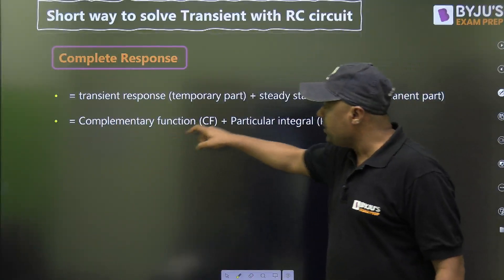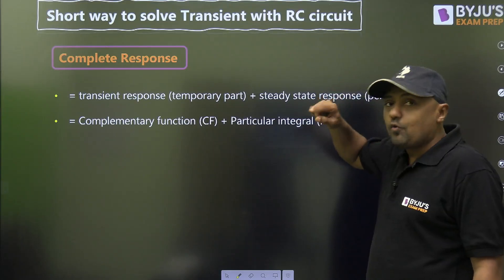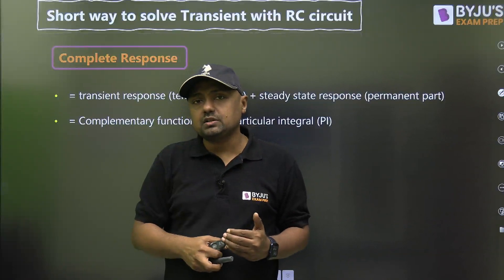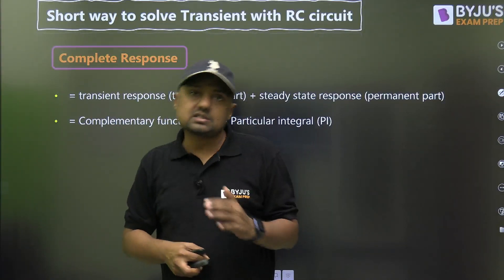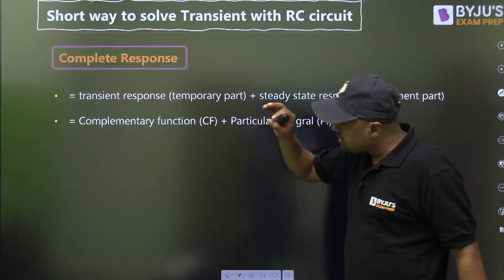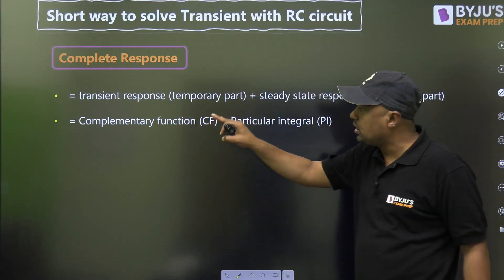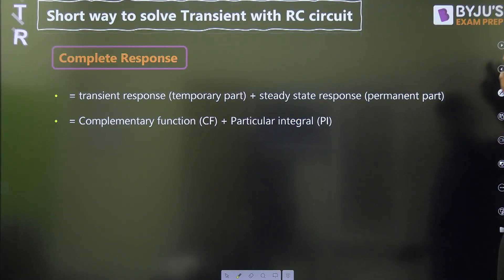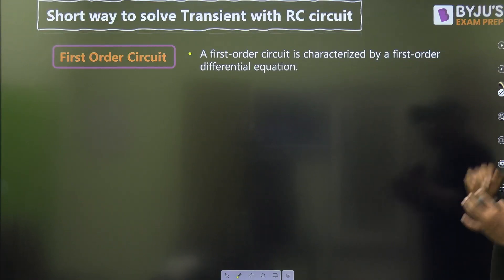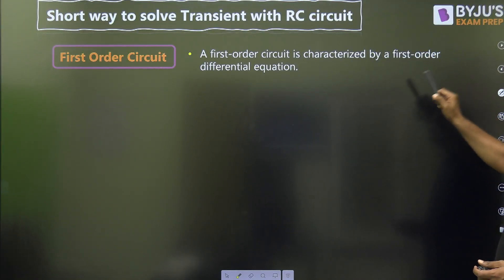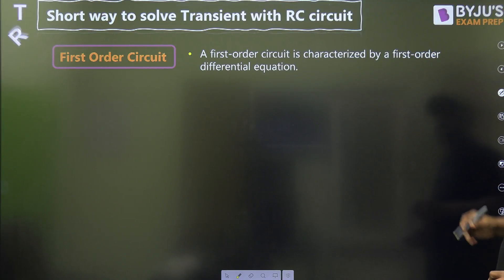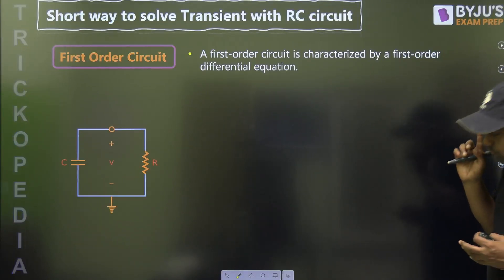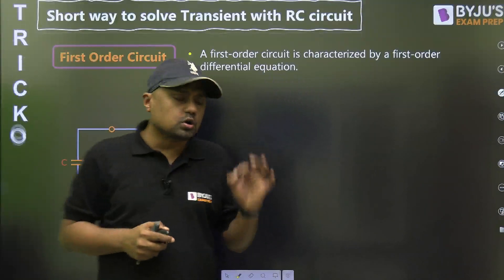In terms of mathematics, these correspond to the complementary function and particular integral. When we have a first-order differential equation, that particular circuit is called a first-order circuit. In a first-order circuit, we get two solutions: complementary function and particular integral. A first-order circuit is characterized by a first-order differential equation.